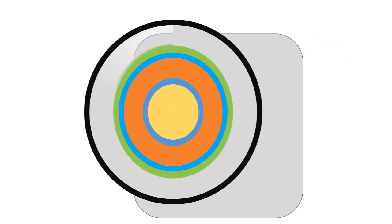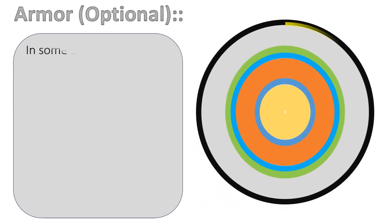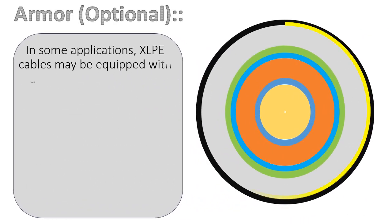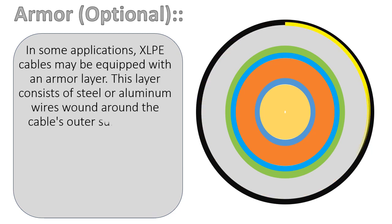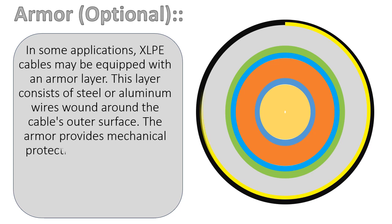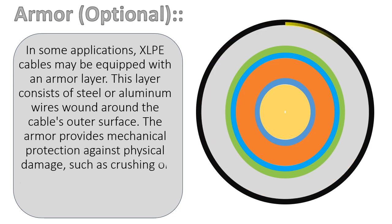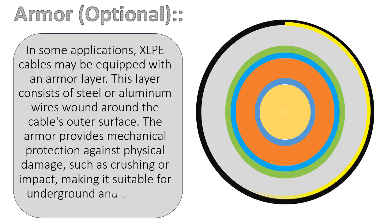Armor (Optional): In some applications, XLPE cables may be equipped with an armor layer. This layer consists of steel or aluminum wires wound around the cable's outer surface. The armor provides mechanical protection against physical damage, such as crushing or impact, making it suitable for underground and outdoor installations.